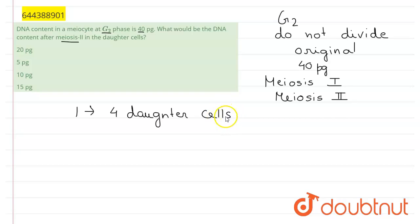At the end of meiosis 1, the DNA content remains intact. After meiosis 1, there is no change in DNA content. So after meiosis 1, the DNA remains unchanged at 40 picograms.